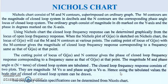Using the Nichols chart, the closed loop frequency response can be determined graphically from the locus of the open loop frequency response. When the Nichols plot of G(jω) is sketched on a Nichols chart, the locus of G(jω) will cut the M and N contours at various points. This cutting point of the locus of G(jω) with the M contours gives the magnitude of the closed loop frequency response corresponding to the same frequency as that of G(jω) at that point.